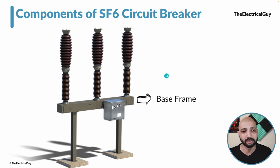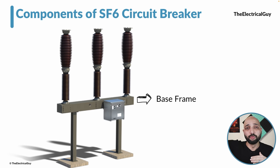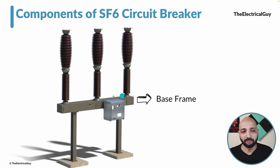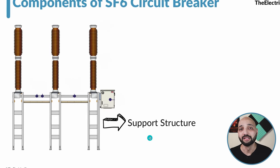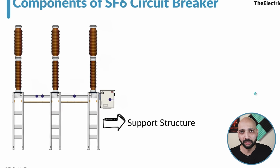The three poles — three interrupters and three support insulators — must be assembled on something. The frame they are assembled on is called the base frame, which is the horizontal steel portion you see here, and all components are screwed to it. Since we are connecting 145 kV, 170 kV, or 245 kV supply, significant distance must be maintained between live parts and ground. Therefore, we cannot place the base frame directly on the ground — a support structure made of steel is used to maintain safe clearance between live parts and ground.